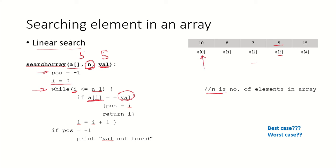We first go to a[0] — a[i] is 10. Is it equal to the value that we are looking for? No, it is not equal, so we will simply increment the index. Now i becomes 1. We check a[1] — is it equal to the value that we are looking for? We are searching for 5. No, it is not equal, so increment i again to 2.